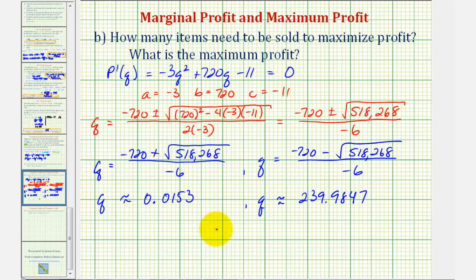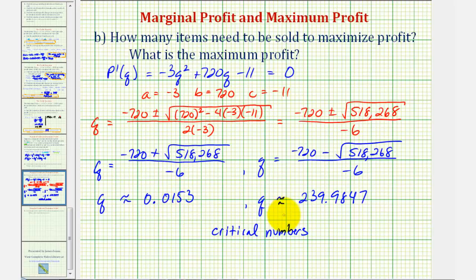These are the critical numbers which should maximize or minimize the profit function. Since we're trying to maximize the profit function, to determine whether we have a max or min at these values of q, we need to use either the first or second derivative test.